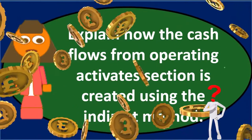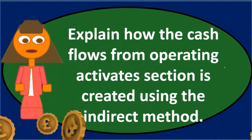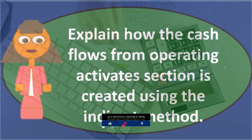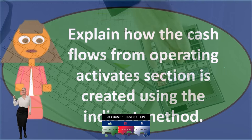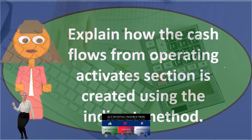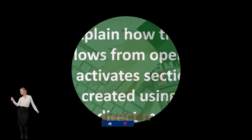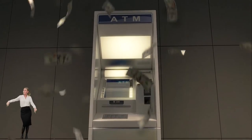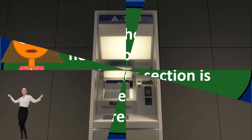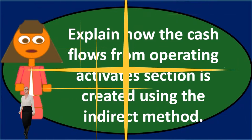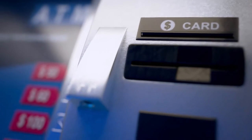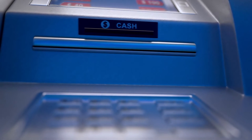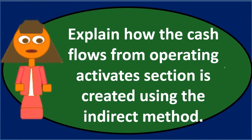We know those changes relate to cash because if we look at the journal entry for any current asset or current liability, it typically involves an income statement account — that's how we know it deals with operating activities. For example, accounts receivable: the major journal entry is debit accounts receivable, credit revenue. If accounts receivable increases, we recorded revenue in net income for which we did not receive cash, so we must decrease net income to get to a cash basis.